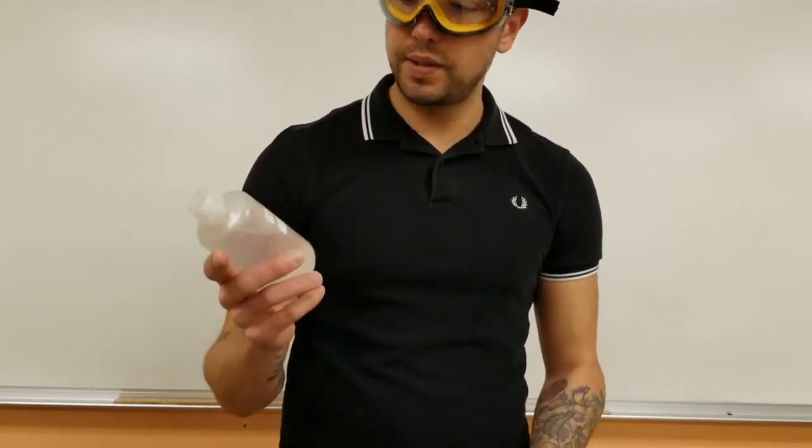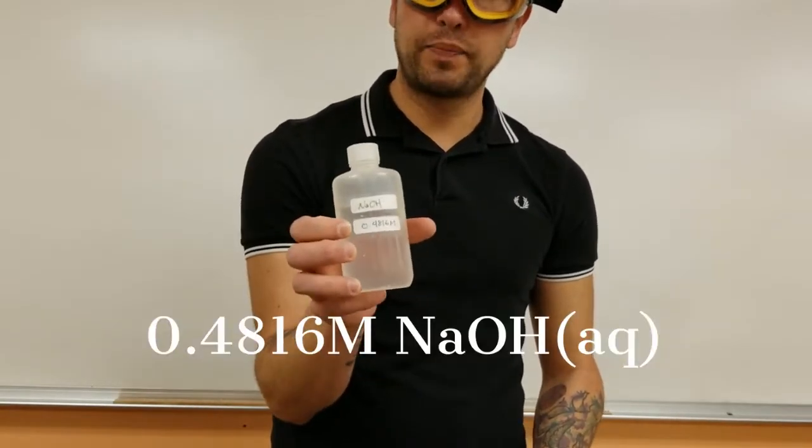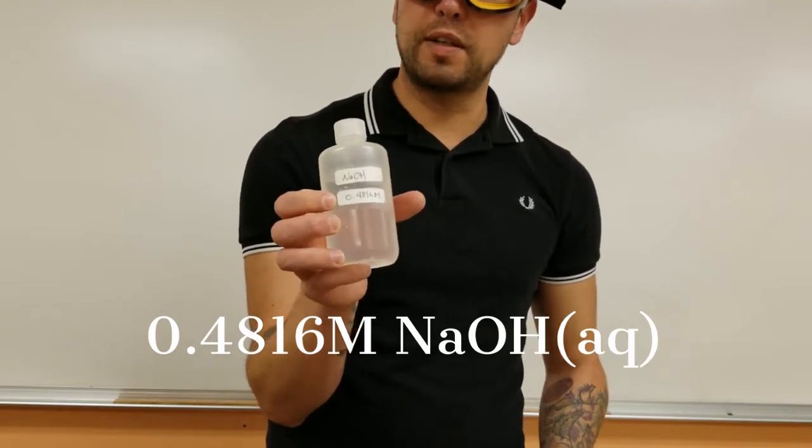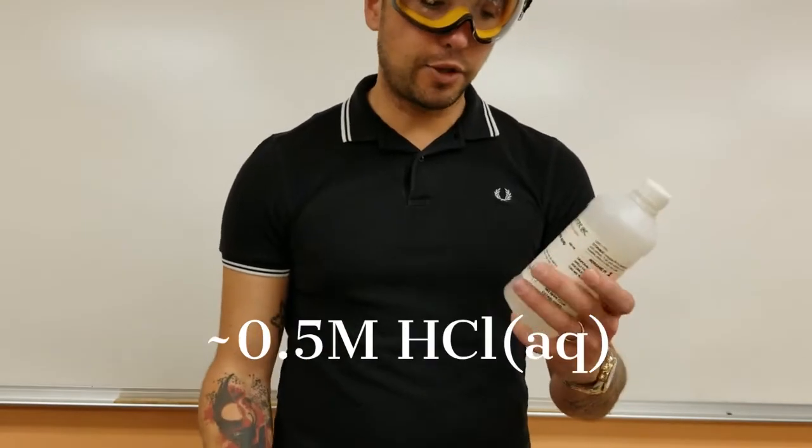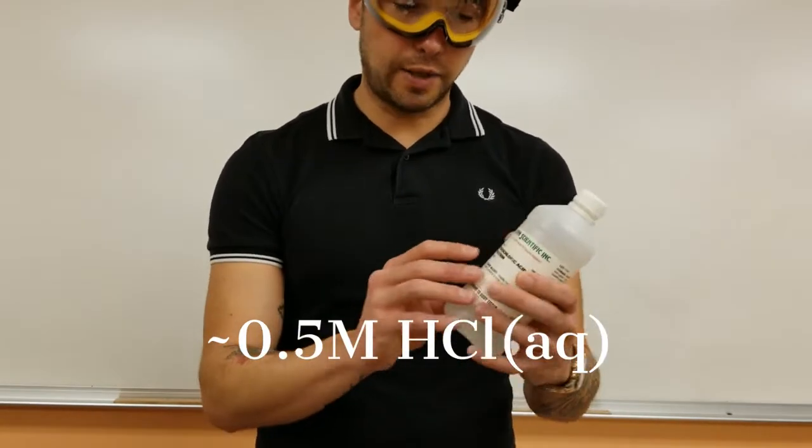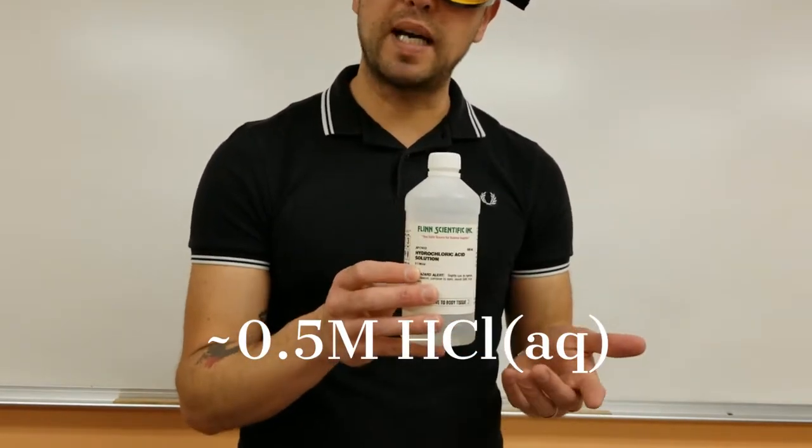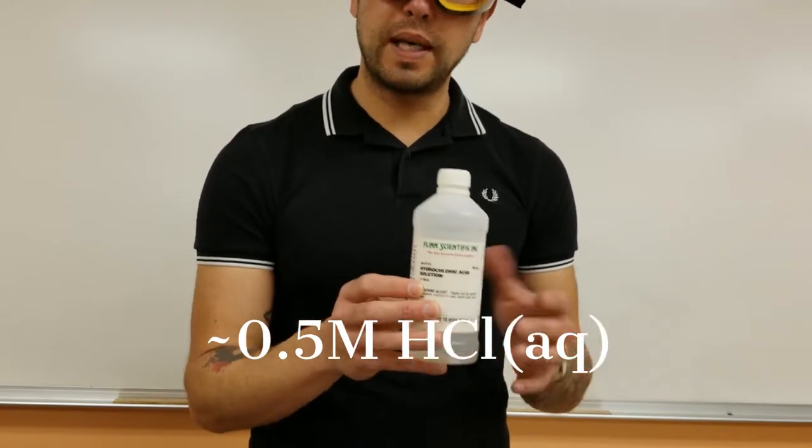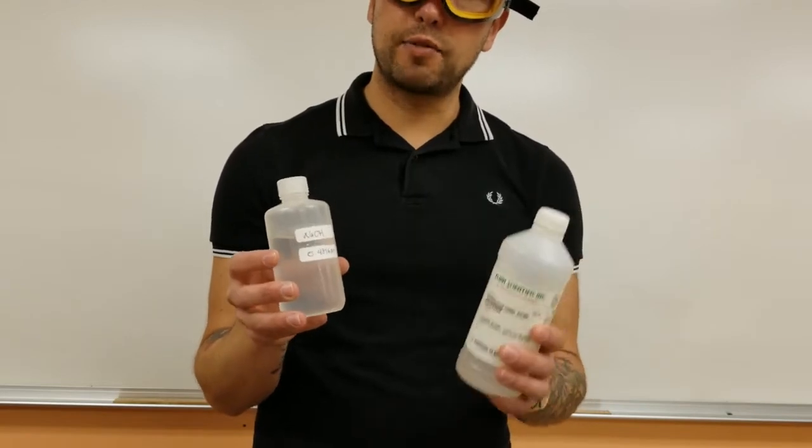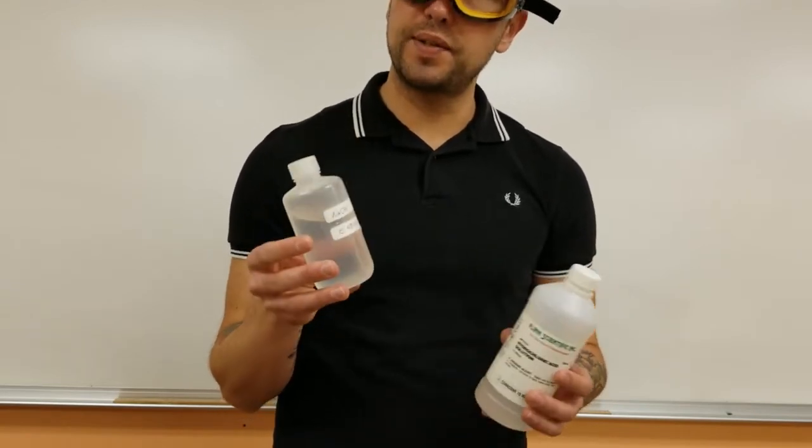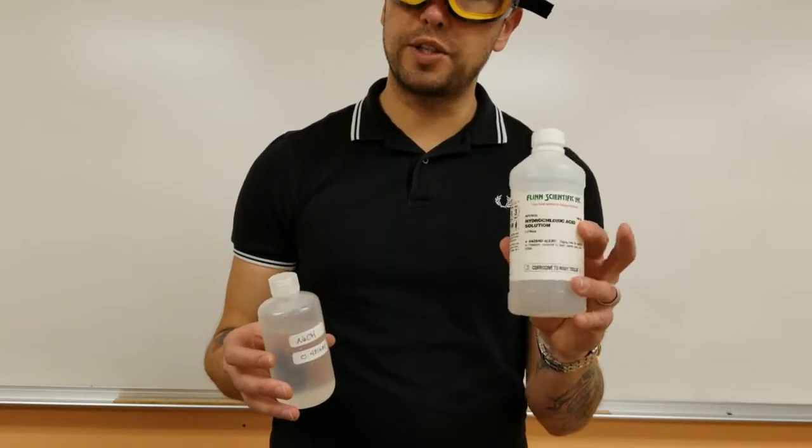For instance, this sodium hydroxide, I know the concentration of it very precisely. This hydrochloric acid, it only says that it's approximately 0.5 molar. So what we're going to do is we're going to see how much of this acid it takes to react with a certain amount of this base to determine the concentration of this.